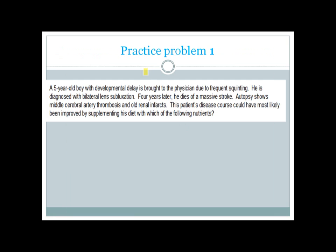Practice problem: A five-year-old boy with developmental delay is brought to the physician due to frequent squinting. He is diagnosed with bilateral lens subluxation. Four years later, he dies of a massive stroke. Autopsy shows middle cerebral artery thrombosis and old renal infarcts. Which nutrient supplementation would most likely have improved this patient's disease course?